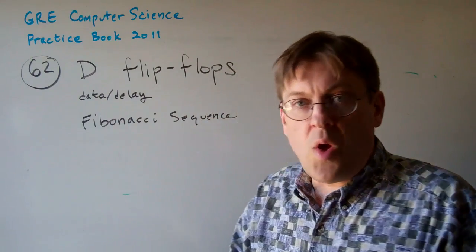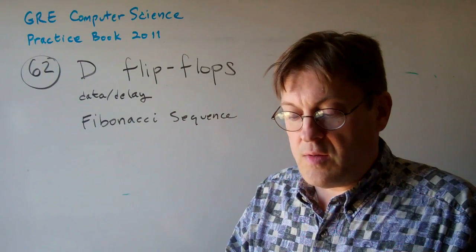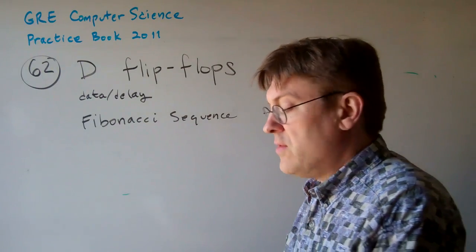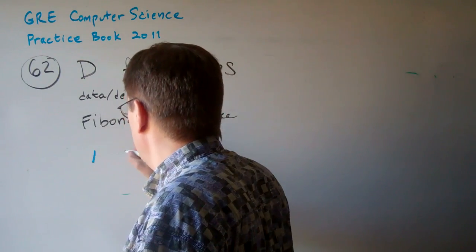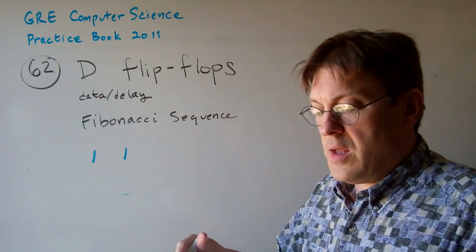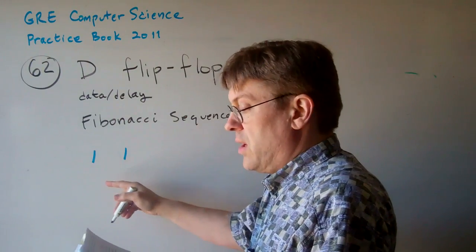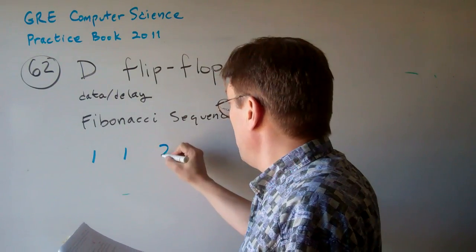First, what are the first seven Fibonacci numbers? It gives us the first two: f of 1 is 1, f of 2 is 1, then f of n is f of n minus 2 plus f of n minus 1. So basically, the next one is 1 plus 1, which is 2.